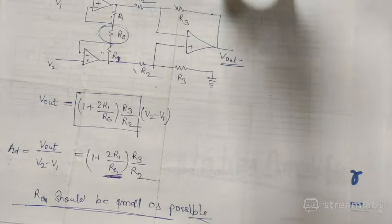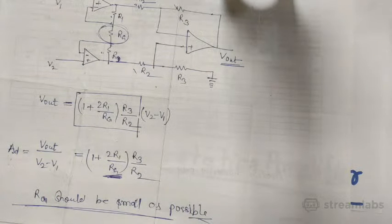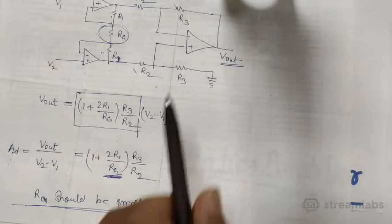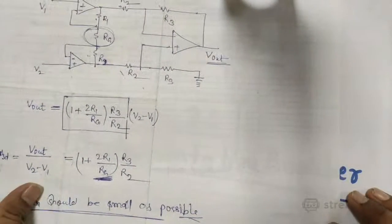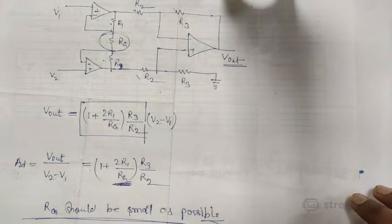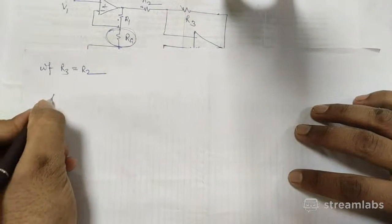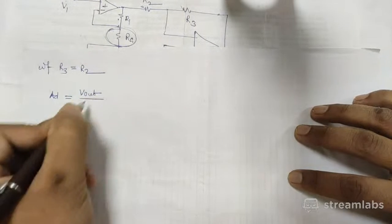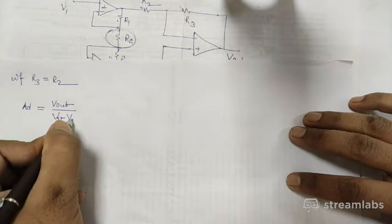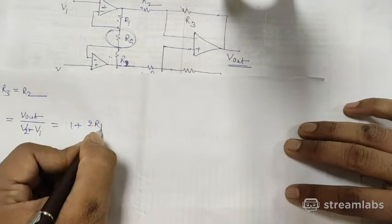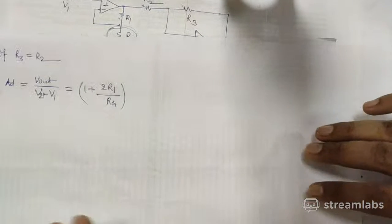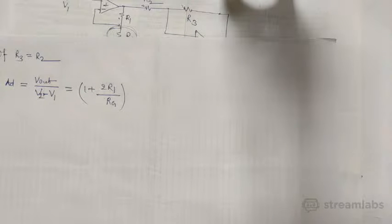If I take R3 and R2 equal, then it becomes similar to a simple non-inverting amplifier. If R3 equals R2, then the differential gain Vout upon V2 minus V1 simplifies to 1 plus 2R1 upon Rg. This makes gain control much easier.